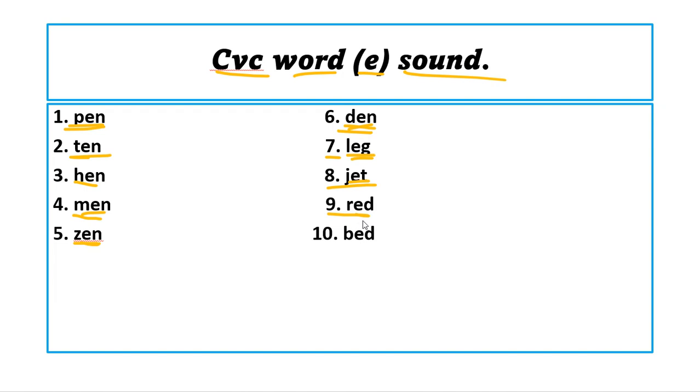Number nine, red. It's a color, color of the clothes or your hair sometimes. Number ten we have bed. The last thing that you go when you are sleeping, that is your bed. Again, B will be the consonant, E will be the vowel, and D will be the consonant. So CVC words: consonant, vowel, consonant. Thank you so much class. This is our review for today. I hope you learned something and have a good day, bye.